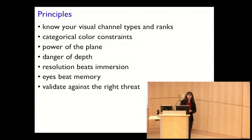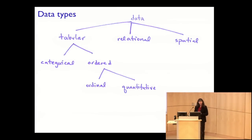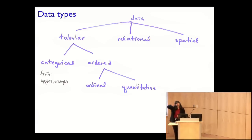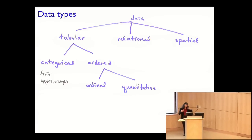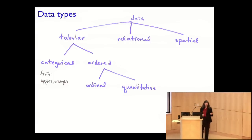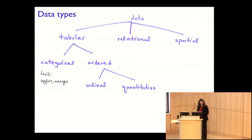Before talking about visual channel types, we need basics on data types. In a data table, columns might contain categorical attributes — for example, fruit: apples, oranges, bananas. With categorical data you can know you are in a category or out of a category, but there is no implicit ordering. There are ways to impose orderings on categorical data, but a priori from the data's point of view, it's just categories — in or out, as opposed to ordered data.